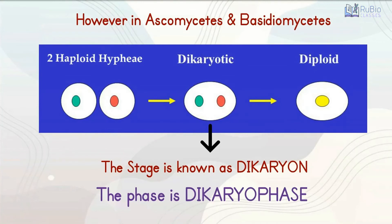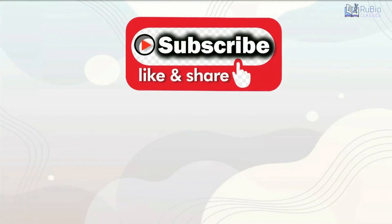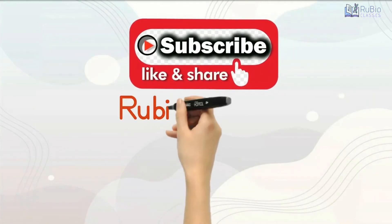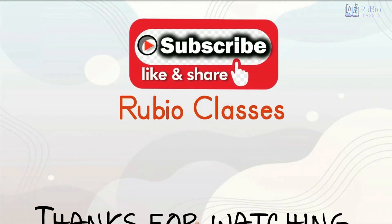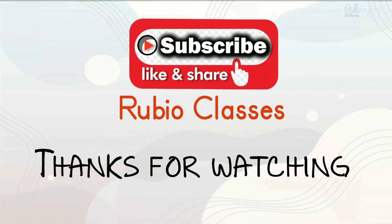Later, the parental nuclei fuse and the cells become diploid. The fungi form fruiting bodies where meiosis occurs, leading to the formation of haploid spores. Please like, share, and subscribe to our channel for more such interesting videos. Thanks for watching.